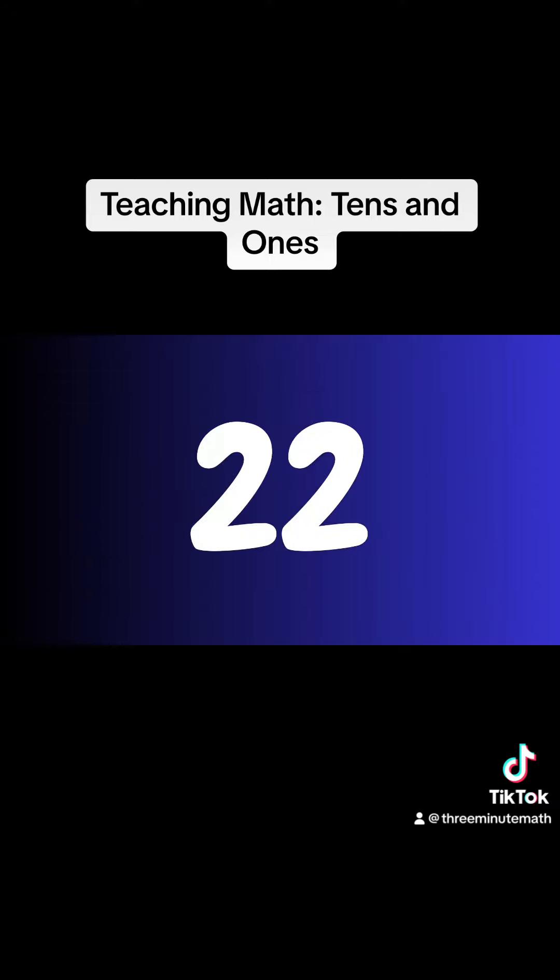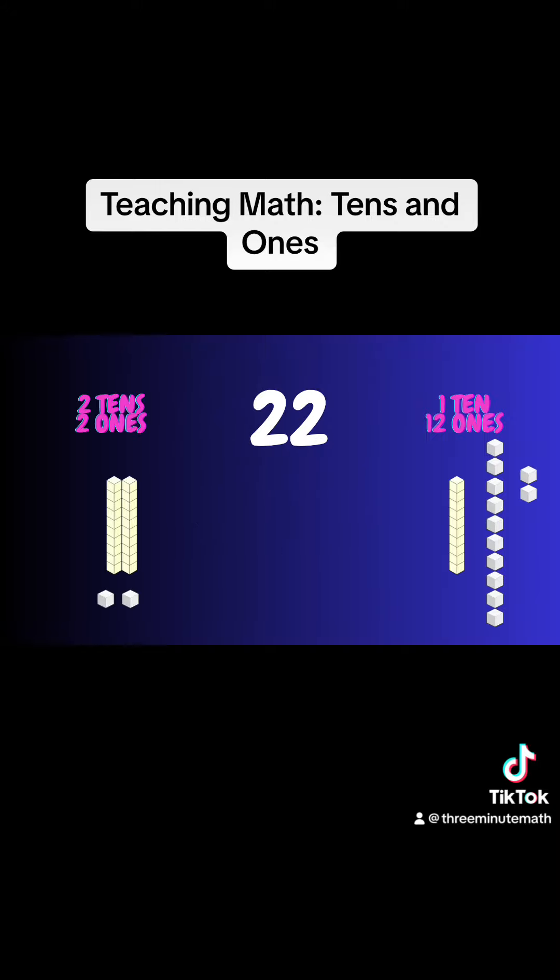For our last example, let's look at the number twenty two. So twenty two can be written as two tens and two ones, but it can also be written as one ten and twelve ones.